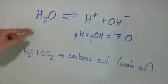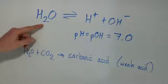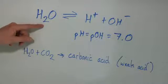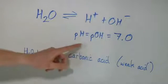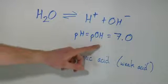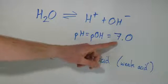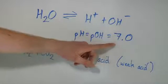Water by definition has a pH of 7, because it has equal concentrations of hydrogen ions and hydroxyl anions. Here we have a basic equation for water breaking up into its parts: water goes to hydrogen ions and hydroxyl anions. Essentially by definition, pH is 7.0, which is neutral.